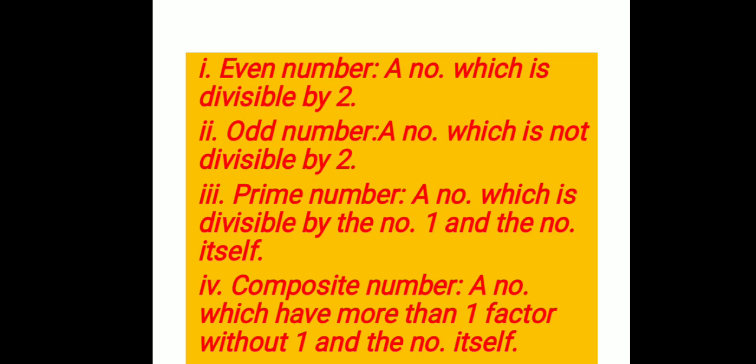For example, four — two is the factor which divides four, so four is a composite number.